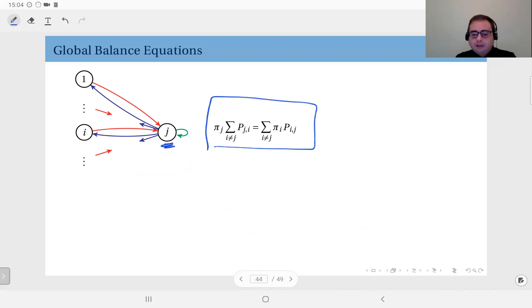State j, of course, has a bunch of transitions into state j from other states, and a bunch of transitions out of j to other states. There is also this self-transition with maybe a non-zero probability you stay in state j.